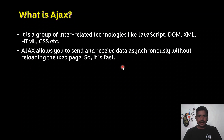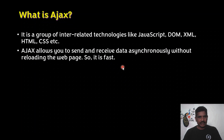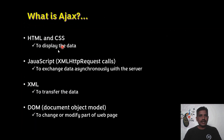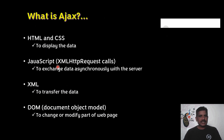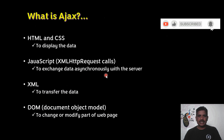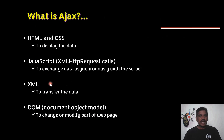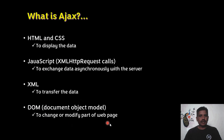The entire web page is not reloaded — whichever part you modified, only that part is updated. HTML and CSS are used to display the data. JavaScript is used to exchange data asynchronously with the server. XML is used to transfer the data. DOM is used to change or modify part of the web page.